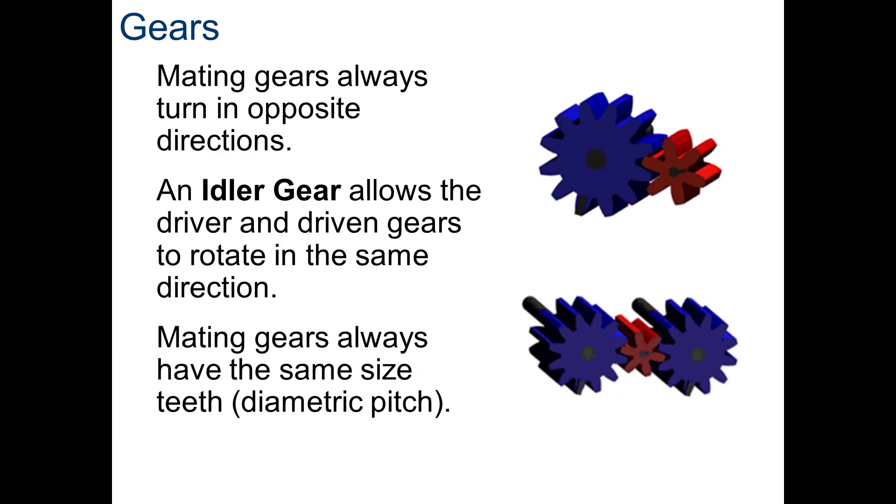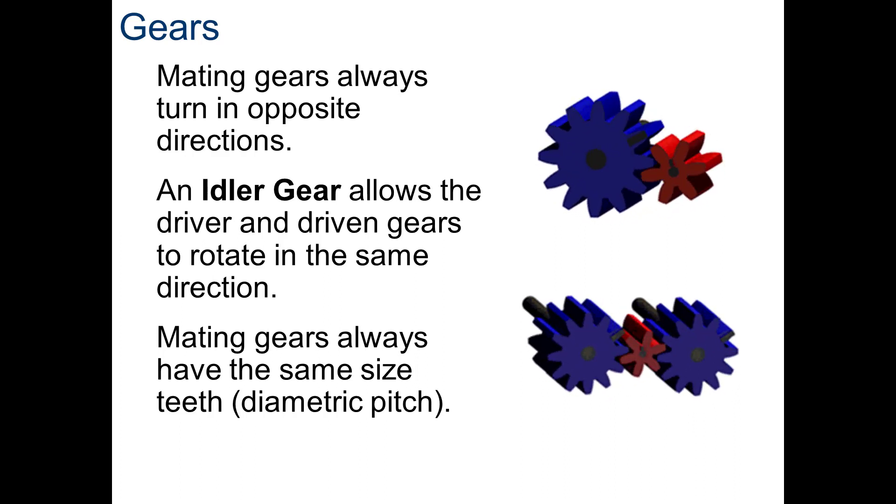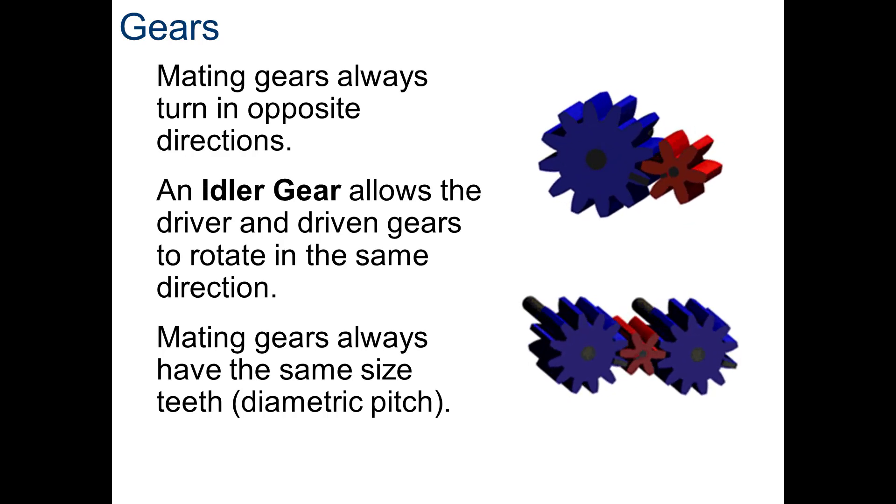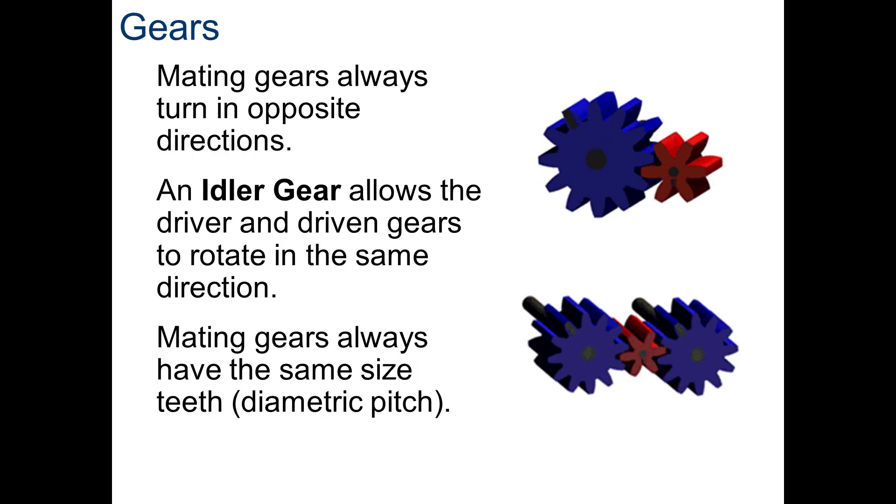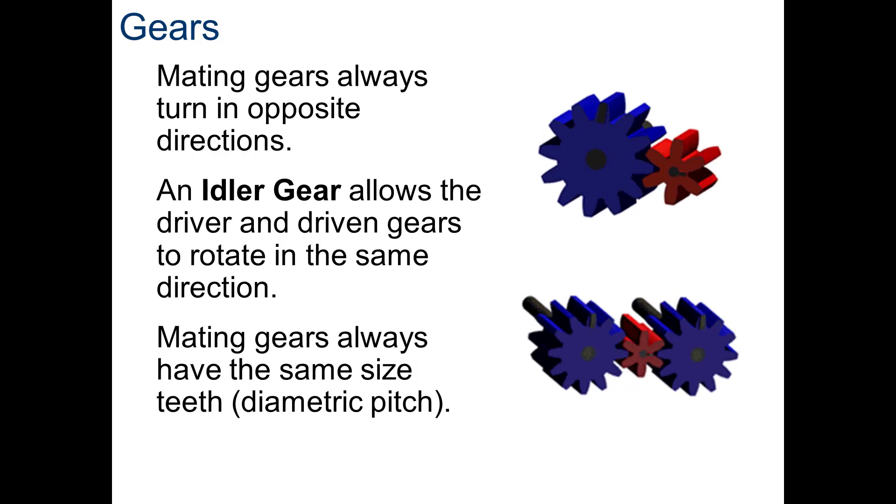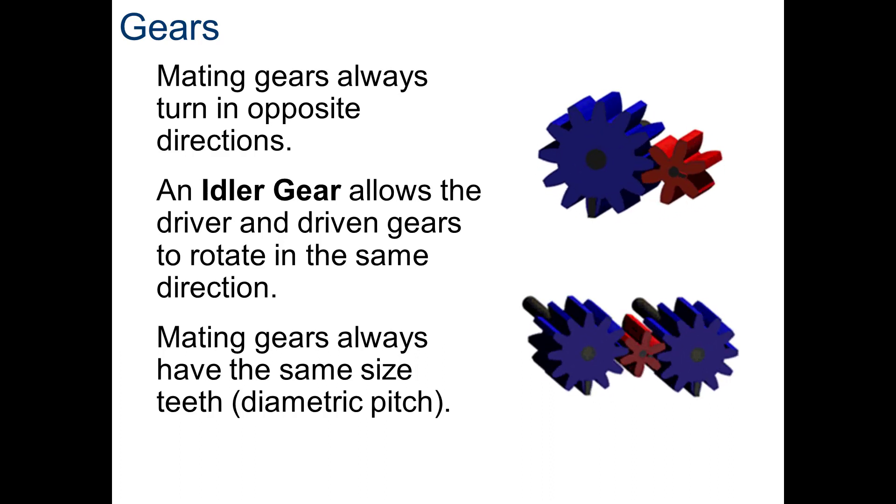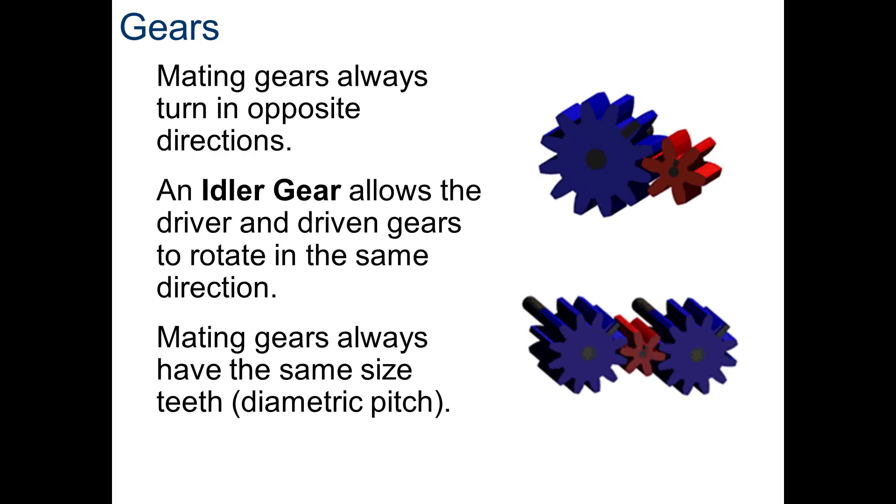Along with that, any pair of mating gears must have the same size pitch, or the same size teeth. And when we talk about the size of teeth of gears, that is referred to as diametric pitch. And there's a formula to calculate diametric pitch, but most people just look it up in a book and understand that a 32dp gear will mate with any other 32dp gear. However, a 32dp gear will not mate with a 20dp gear, diametric pitch.